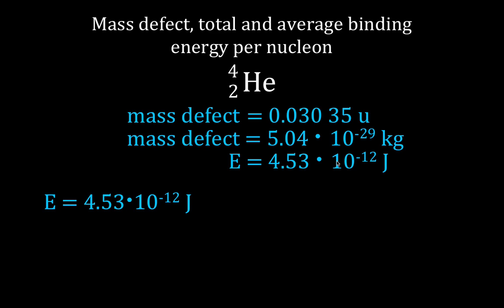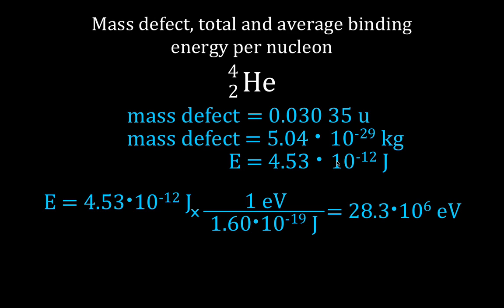We know that one electron volt is 1.6 times 10 to the minus 19 joules. And that gives us 28.3 times 10 to the 6 electron volts, which we would say is 28.3 mega electron volts. So that's the total binding energy.